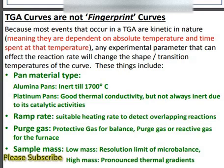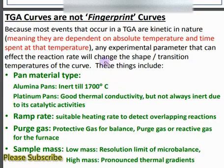Any experimental parameter that can affect the reaction rate will change the shape or transition temperature of the curve. There are two main things that would be changed by changing the experimental parameters: one is the shape of the TGA curves, and the other is the transition temperature, which can also be influenced by changing experimental parameters.